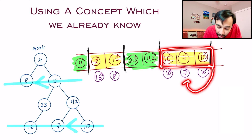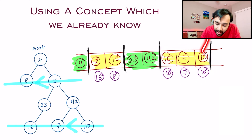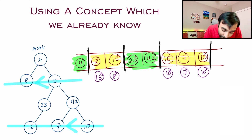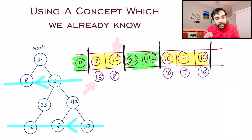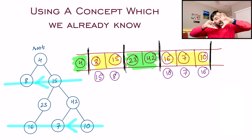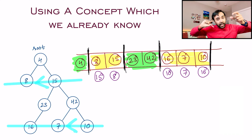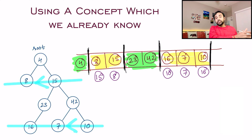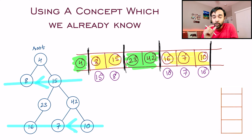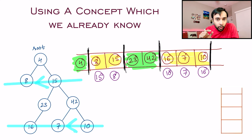You have to convert the order so the last element comes at the first place. The last element 15 should come at the first position, and you do this for every alternate level. The last element should come first — this tells you something: last in, first out. Yes, that is the stack data structure.